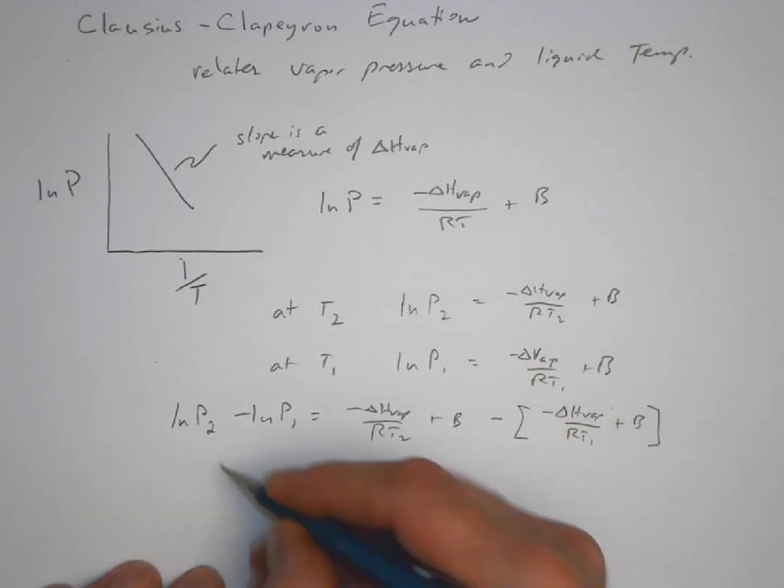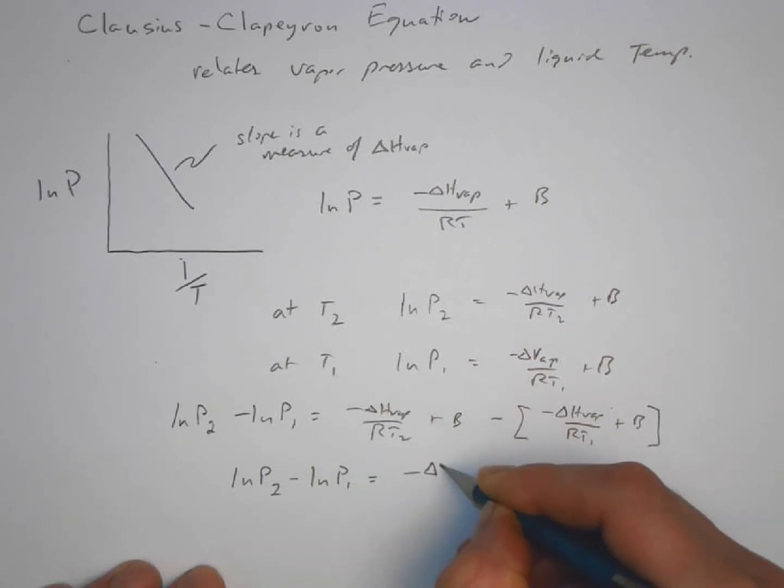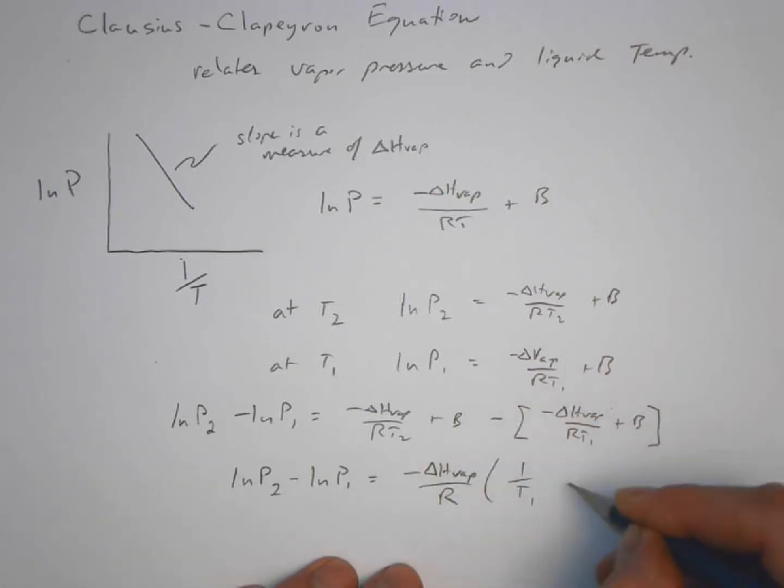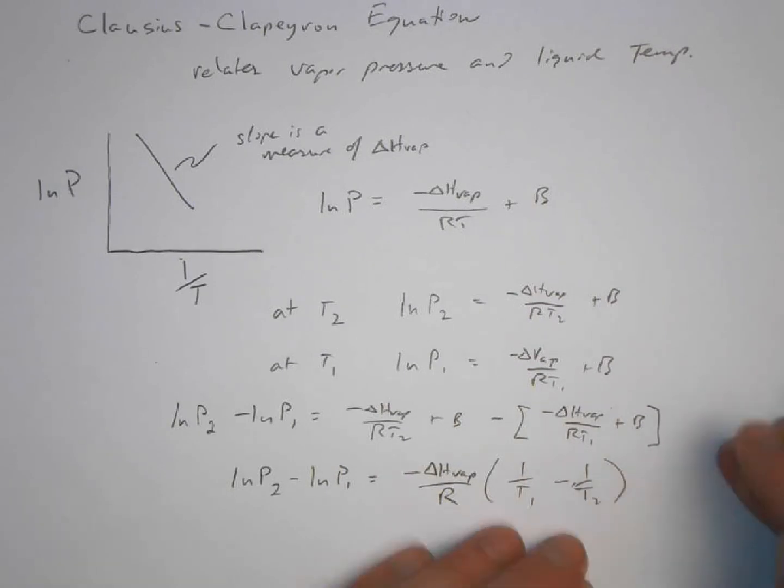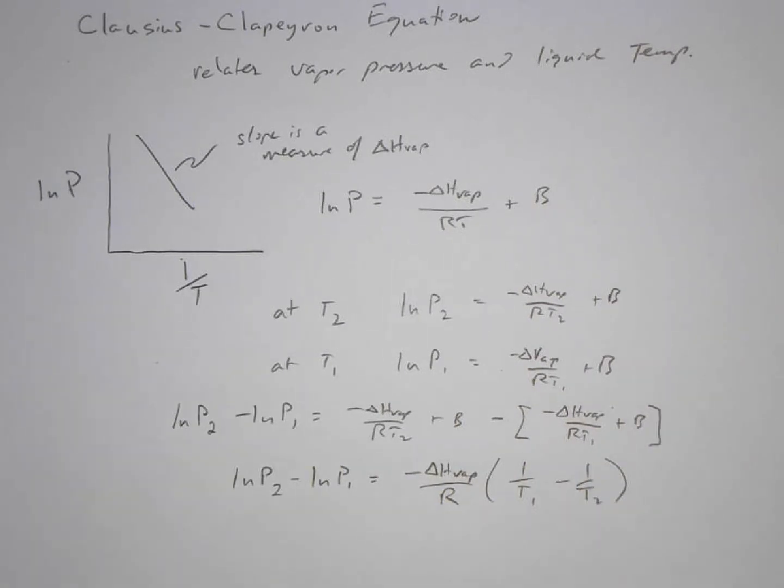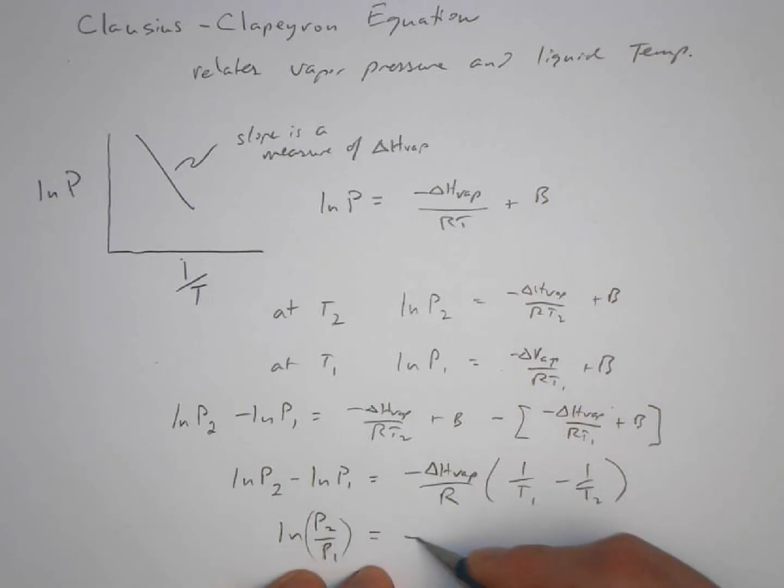And what we end up with is the following: we have the natural log of P2 minus the natural log of P1 equals minus delta H of vaporization over our gas constant. And just getting rid of the variables, we have the following equation. This equation is really quite handy. There's another way to express this using natural logs: ln(P2/P1). Subtracting them of course gives you that, and that's equal to the same thing.